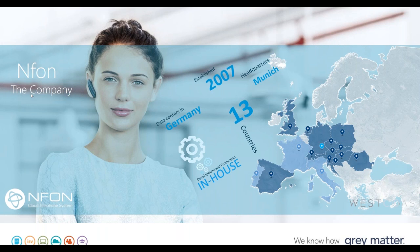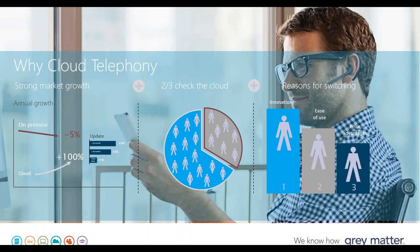It is a platform that allows an end user to scale from two users up to a multi-thousand, multi-site organization. The Enfon platform is an Asterisk-based platform and delivers a full enterprise telephone switch. We have presence in thirteen countries across Europe, so for a UK-based organization it allows the ability to deliver telephony not just in Europe but globally into the US, Asia, and beyond. In today's market, most organizations have an on-prem telephony switch and are moving services into the cloud, and telephony is one area they're now looking at more and more.